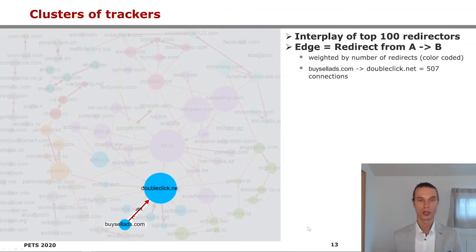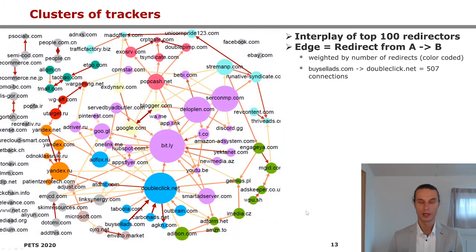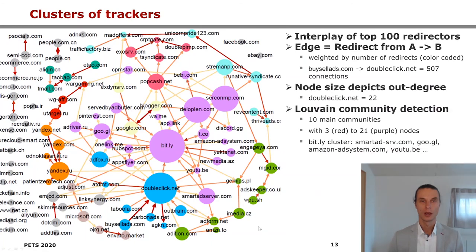The second focus of our research was to evaluate the redirect tracker network. For this, we plotted a graph of the top 100 redirects, where an edge is drawn when a redirect from A to B happened. We also weighted and color-coded the edges by the number of redirects occurred. For example, Bystyle adds redirects to DoubleClick with 500 redirect connections. The node size depicts the out-degree of connections; in this graph DoubleClick has 22 connections to other redirect domains. We then used the Louvain community detection method to visualize clusters of redirect trackers. The algorithm found 10 main communities between 3 and 21 nodes; one of the biggest clusters forms around Bitly, with connections to Amazon AdSystem, YouTube, SmartAdServer, and Google.